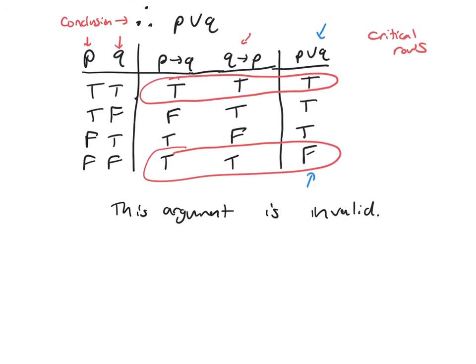Now remember we also had some special types of argument forms. We had modus tollens, which had the form if P then Q, not Q, therefore not P, and it was valid.